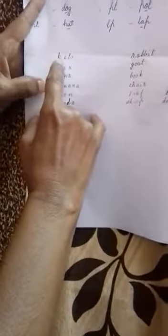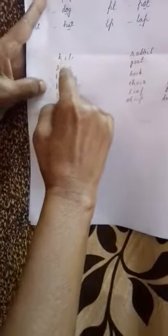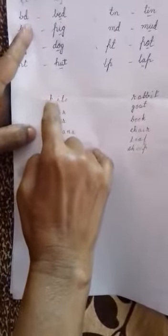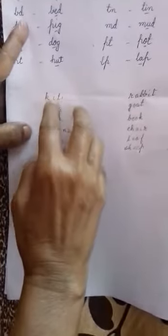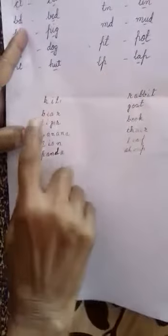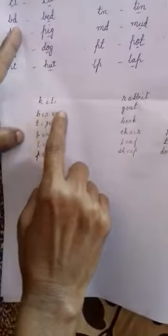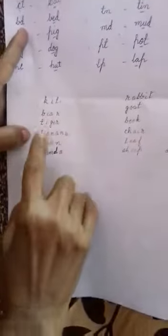The vowel letters are written in red. K, I, T, E — Kite. How many vowels? Two vowels. B, E, A, R — Bear. How many vowels? Two vowels.